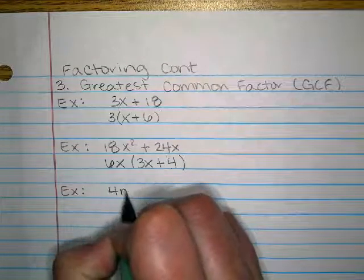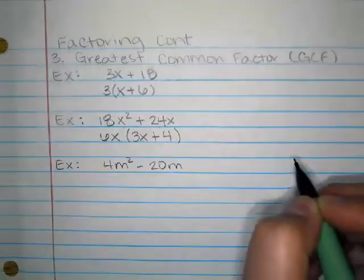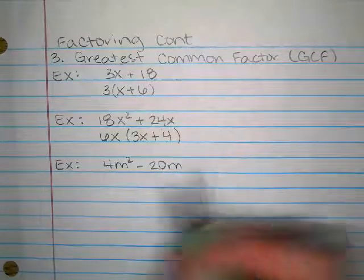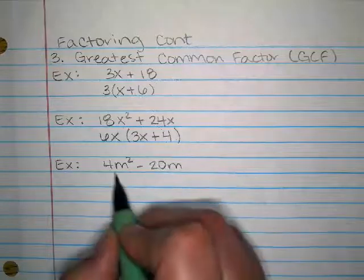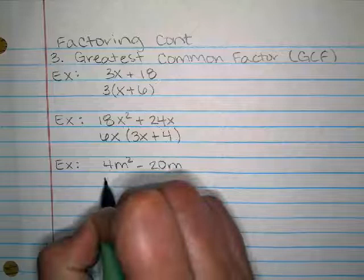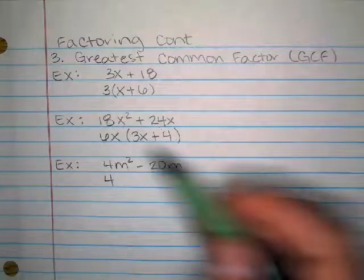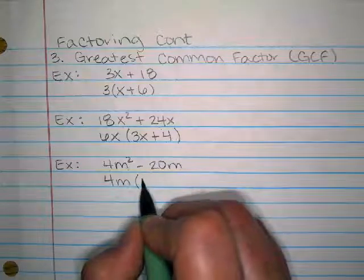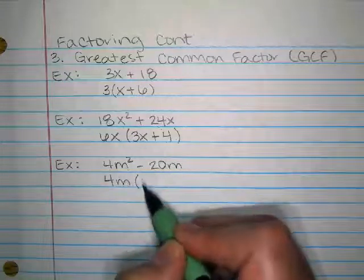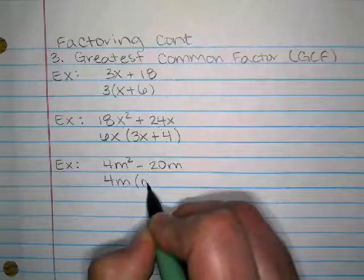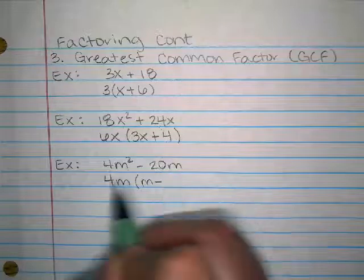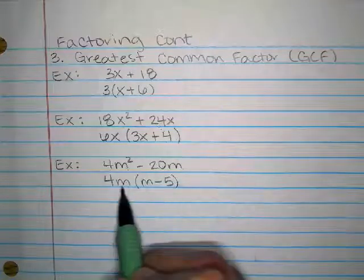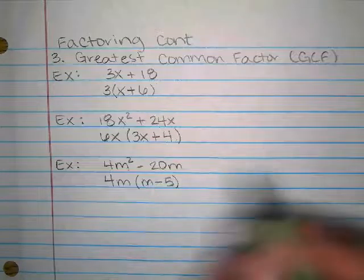Here's another example: 4m² minus 20m. Between the numbers 4 and 20, the GCF is 4 because 4 can divide into both. 2 is also a common factor but it's not the biggest one. So I'm going to take out the GCF of 4. Between the variables m² and m, we're going to take out a GCF of m. So 4 divided by 4 is 1 — you can write a 1 there or just leave it since m² divided by m is m. Then 20 divided by 4 is 5, and m divided by m is gone. So the GCF was 4m, the leftovers were m minus 5.